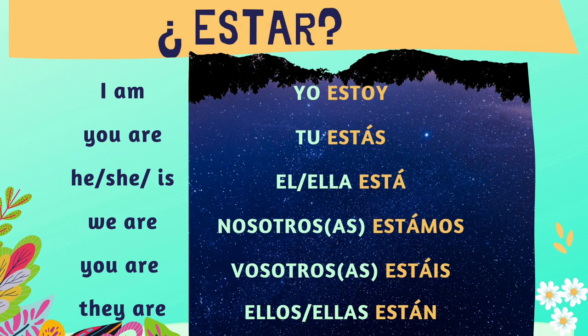Verbo estar: I am – yo estoy. You are – tú estás. He/she is – él/ella está. We are – nosotros estamos. You are (plural) – vosotros/vosotras estáis. They are – ellos/ellas están.